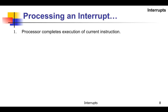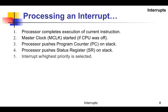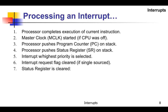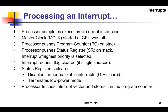When processing an interrupt: the processor completes execution of the current instruction, the master clock is started if the CPU was off or in sleep mode, the program counter and status register are pushed onto the stack, the interrupt with the highest priority is selected if multiple interrupts are pending, the interrupt request flag is cleared for a single interrupt, the status register is cleared which disables further maskable interrupts and terminates low power mode, and the processor fetches the interrupt vector and stores it in the program counter. The interrupt service routine must do the rest.